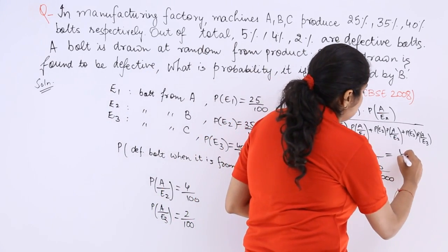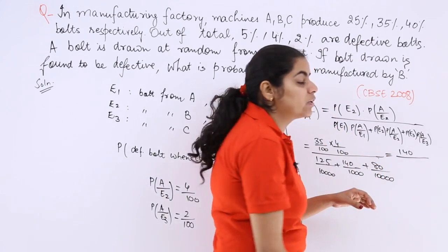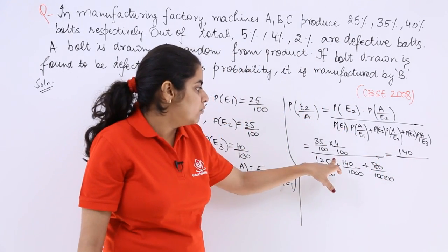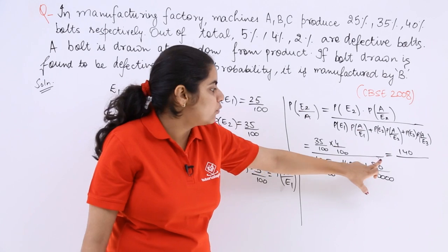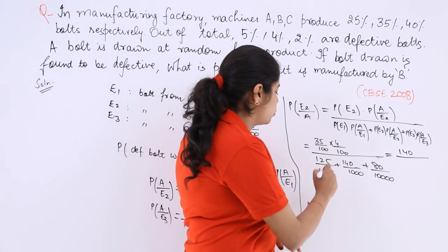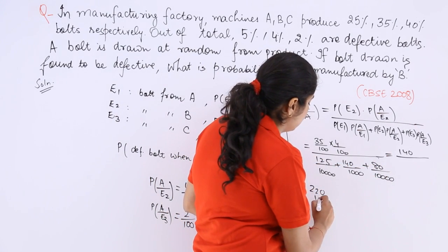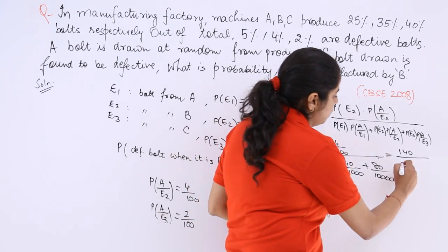So 140 is in the numerator and in the denominator what do we have? 125, 140, 80. So 140 and 80 is 220, and 220 and 125 makes it 345.